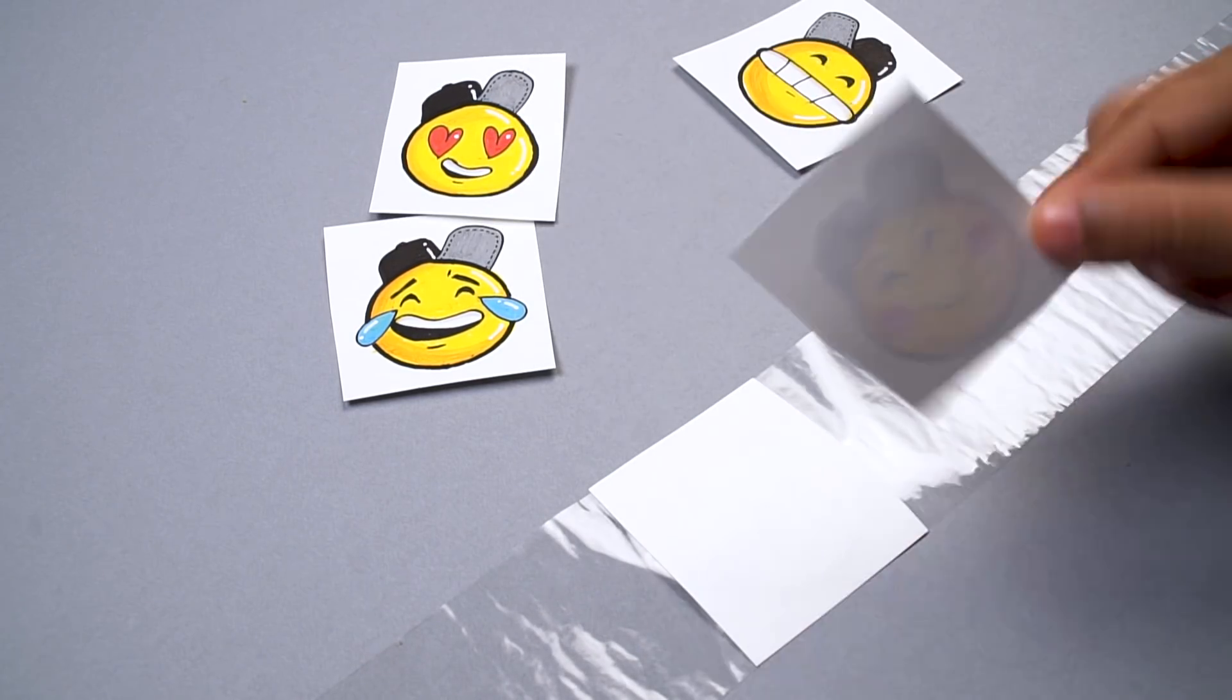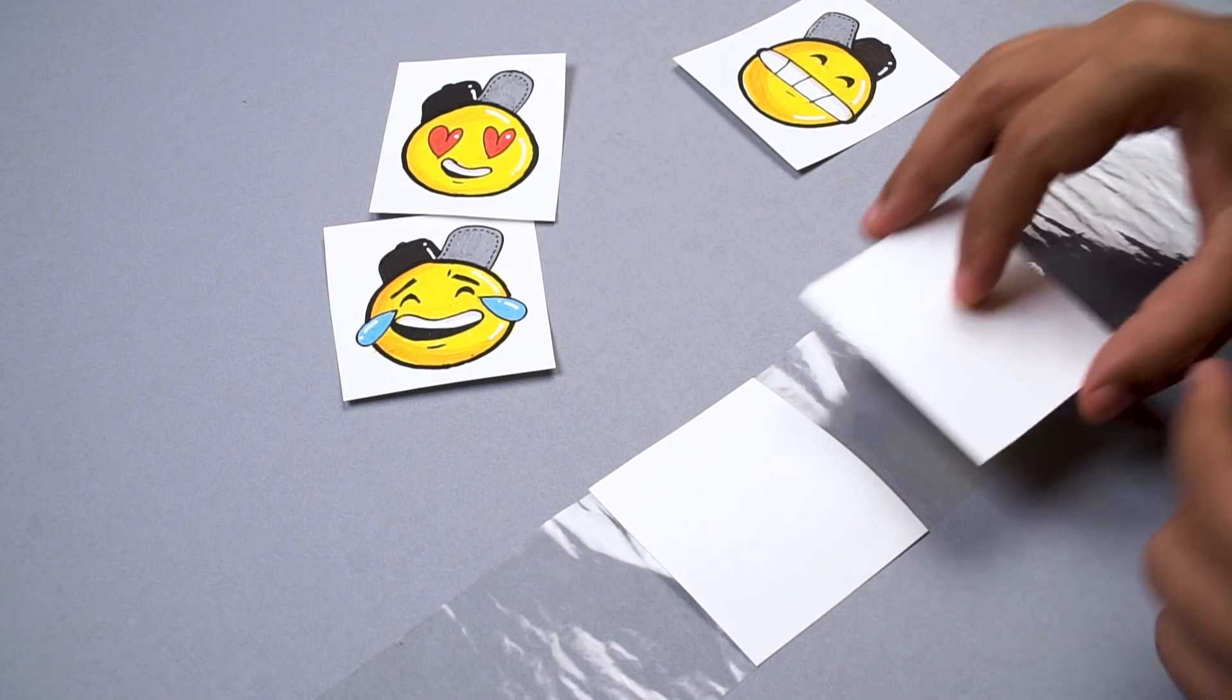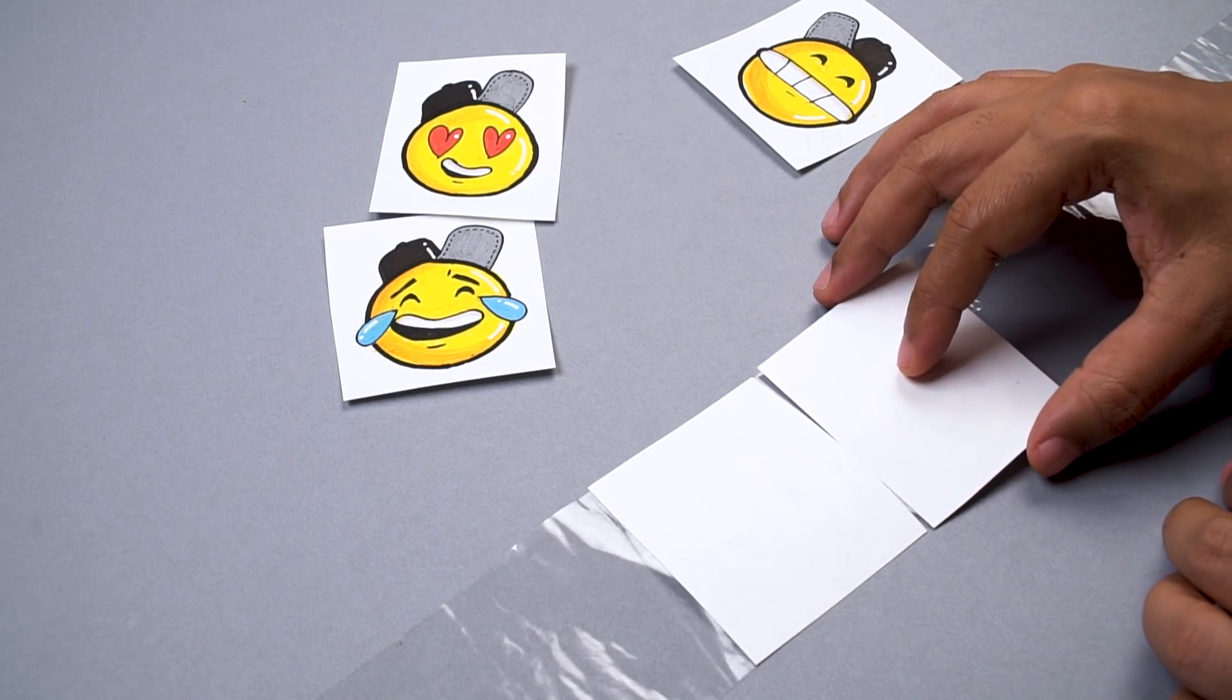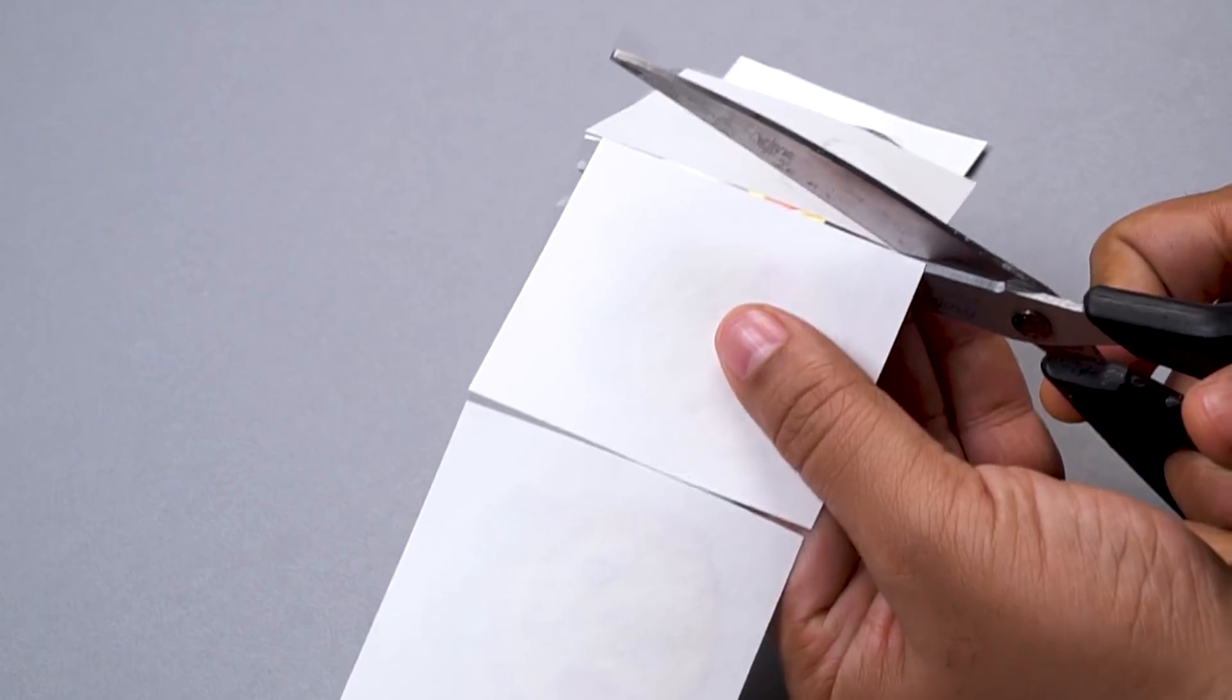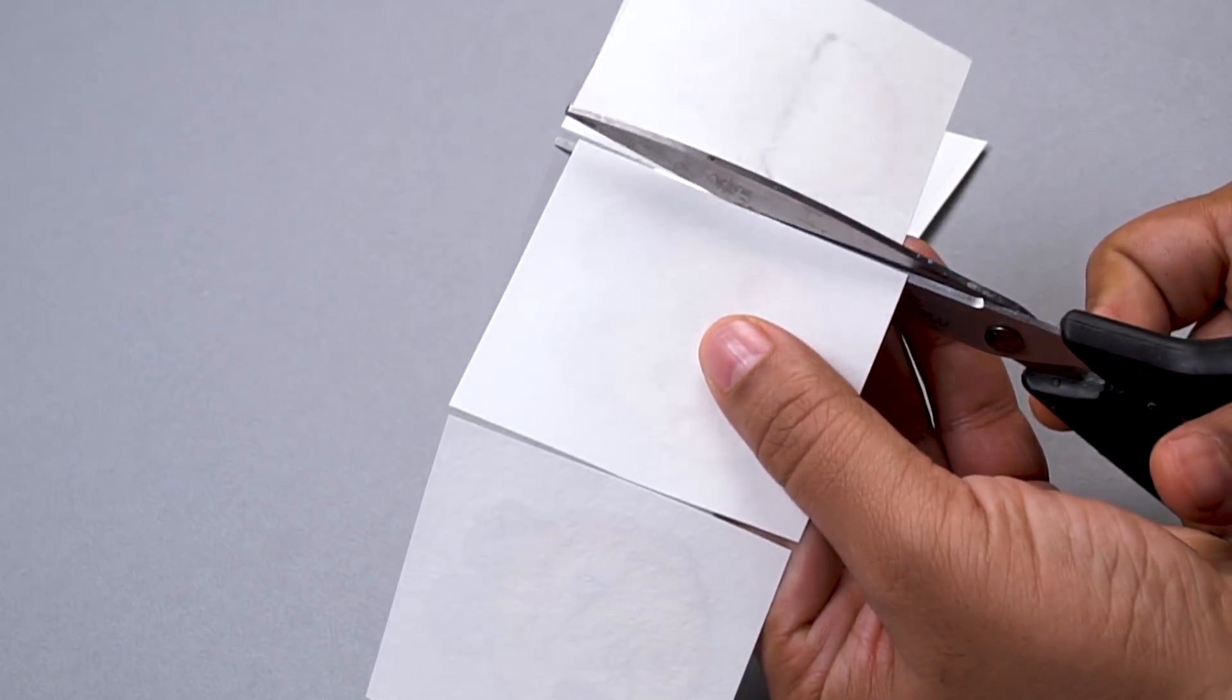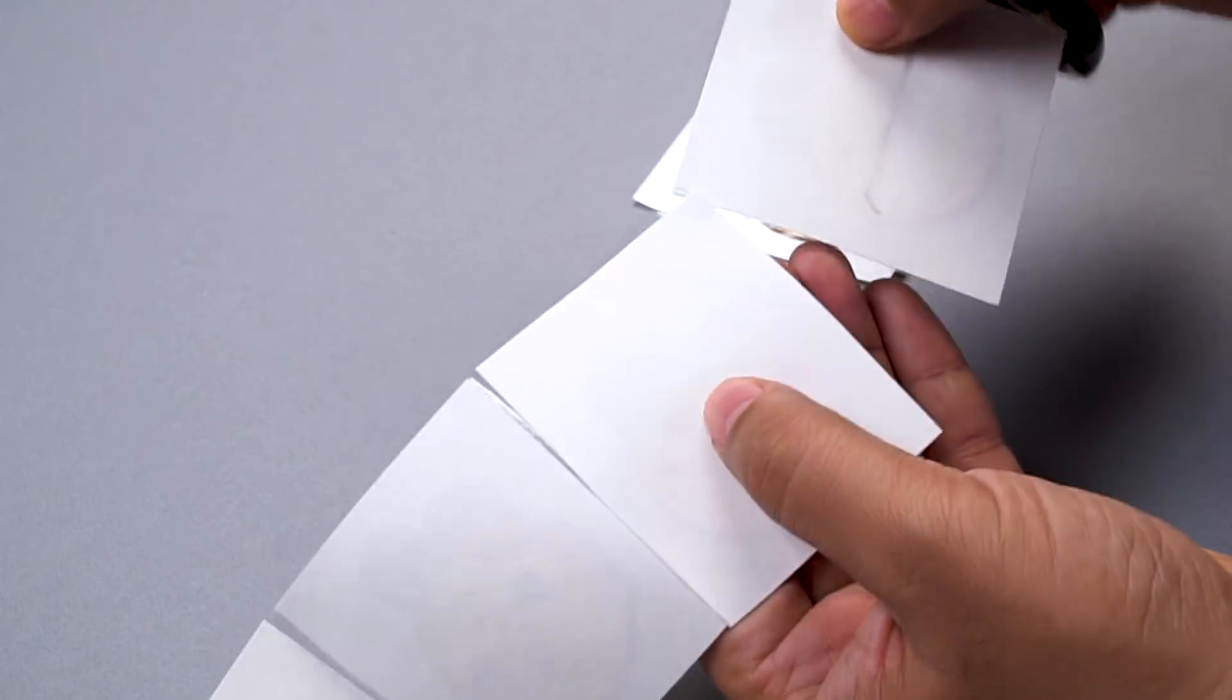And now I'm going to do the same thing for the rest of the stickers. This will basically give a nice glossy finish to our stickers. Okay, all the emojis are done. Now it's time to cut them. I am cutting all the extra bits out.